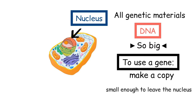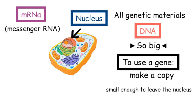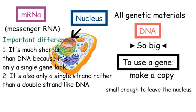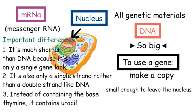Now this copy we're talking about is mRNA, which stands for messenger RNA and is just a copy of a single gene. The structure of mRNA is mostly similar to DNA, but it does have a few important differences. It's much shorter than DNA because it's only a single gene long. It's also only a single strand rather than a double strand like DNA. And finally, instead of containing the base thymine, it contains uracil.